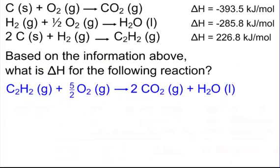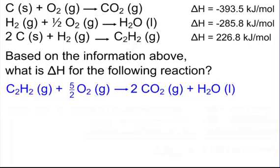Let me give you an example of Hess's Law. We have three reactions — a list of reactions. The first reaction produces carbon dioxide gas, the second produces liquid water, and the third produces C₂H₂, which is ethyne, the one with the triple bond in the middle. Based on the information above, we want to find the delta H for the target reaction shown in blue — the combustion of ethyne.